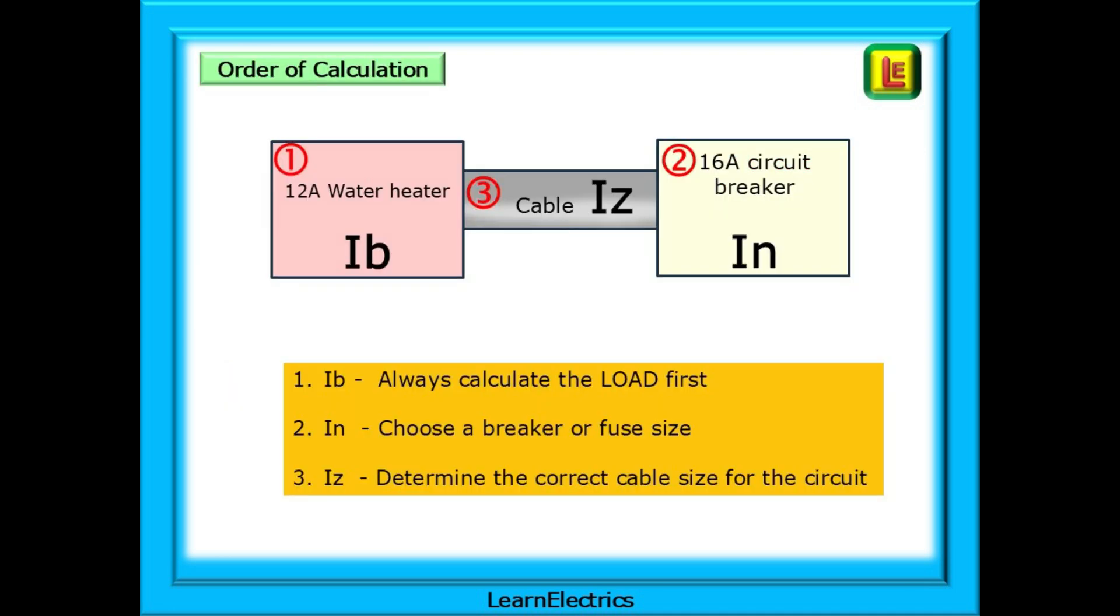There is a specific order of calculation that must be followed. First is IB. We always calculate the load first. Then IN. So that we choose the correct breaker or fuse size. And finally, IZ. We can determine the correct cable size for the circuit.